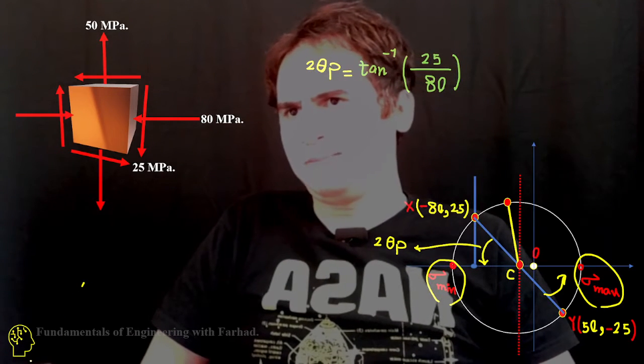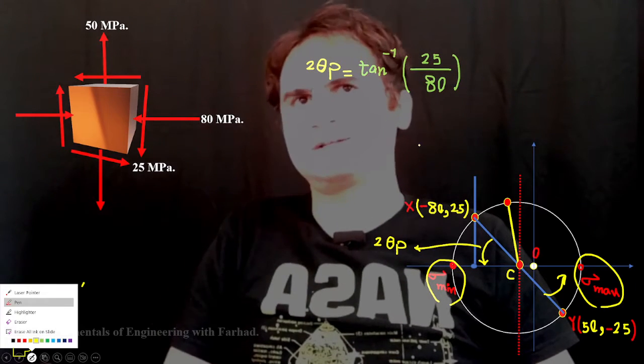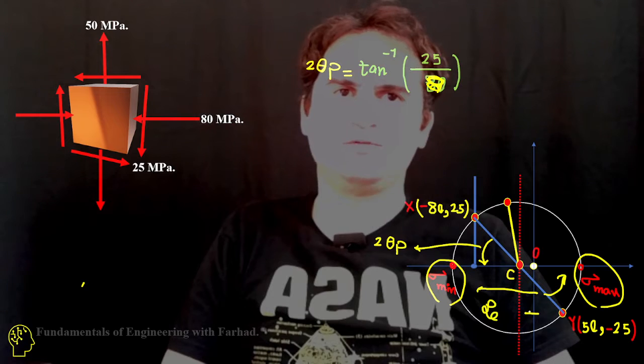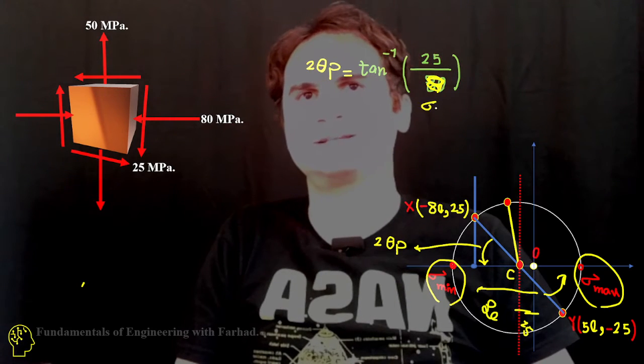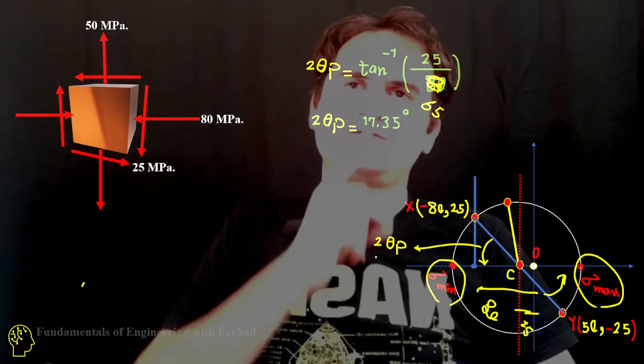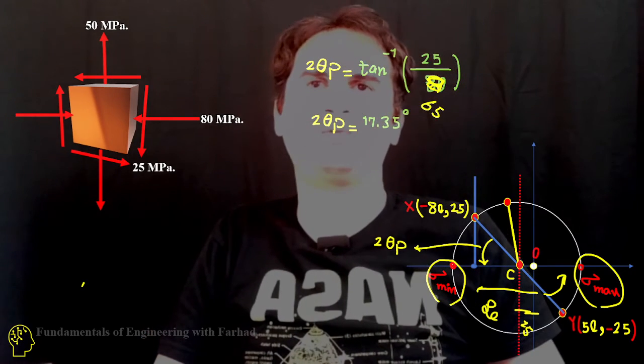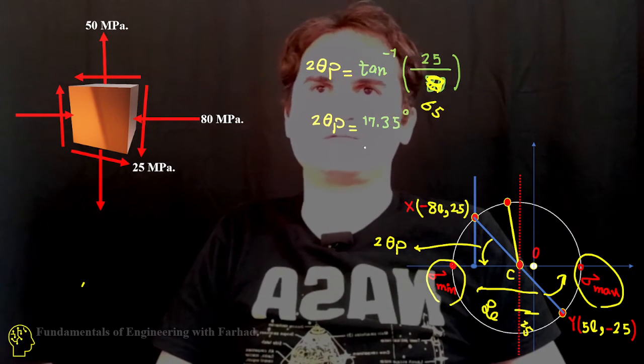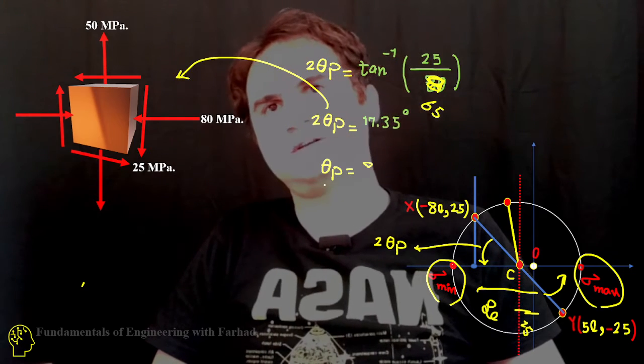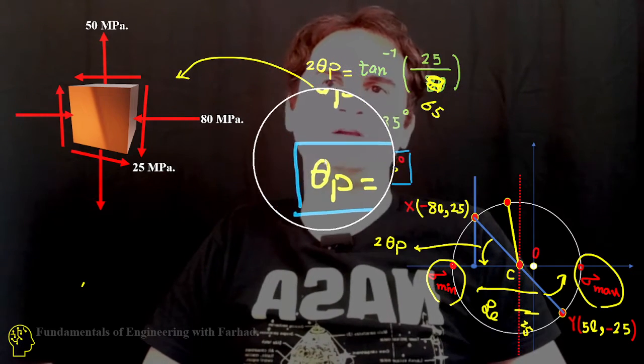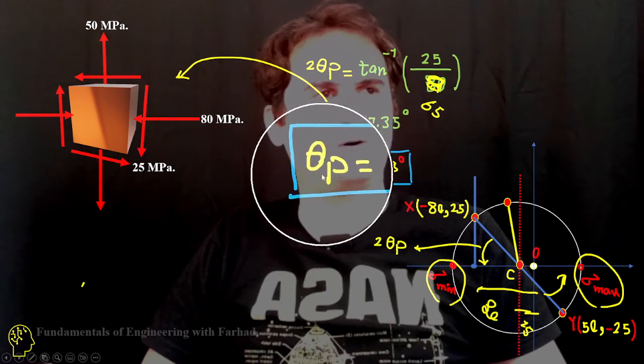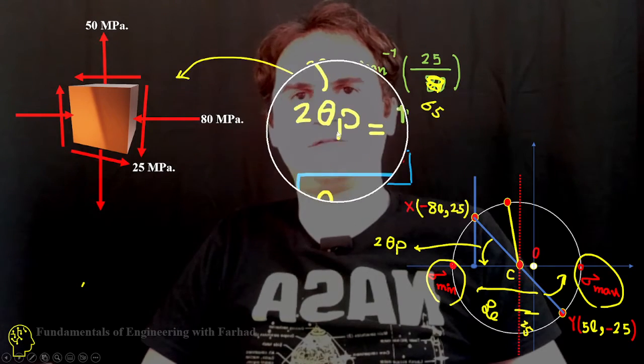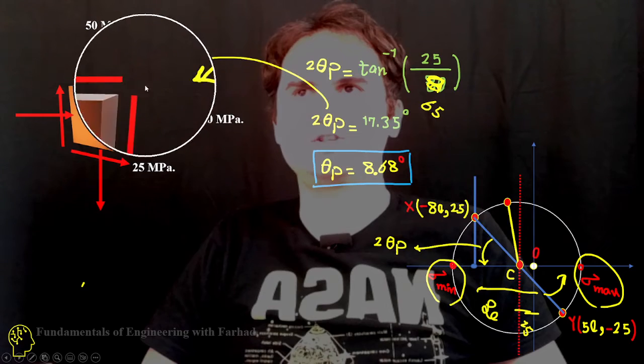I bet that that's 25 over 65, that's not 80 anymore. The total is 80, but if you subtract 15 from that, that's 65. It just gives us 2 theta p is equal to 17.35 degrees. And if you want to bring it to the sample from Mohr circle, you just need one of them, so theta p, the extremum of principal either minimum or maximum, we just need 8.68 degrees of counterclockwise rotation to get rid of shear stress.